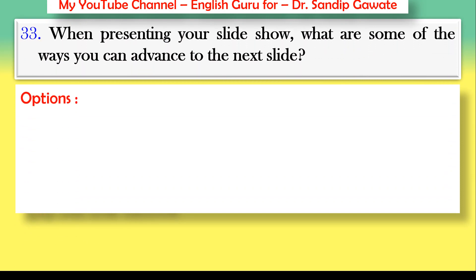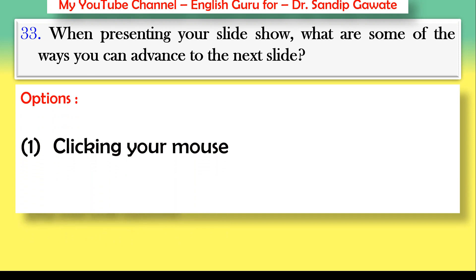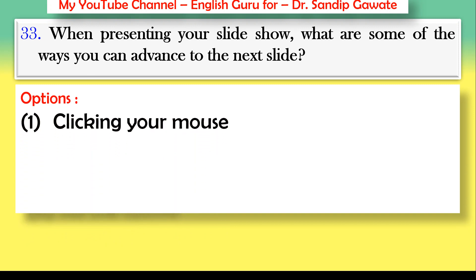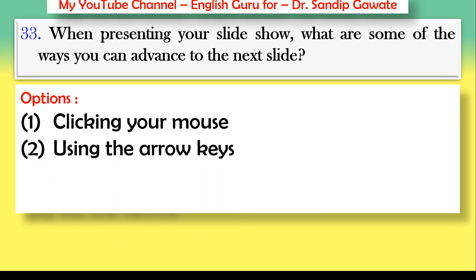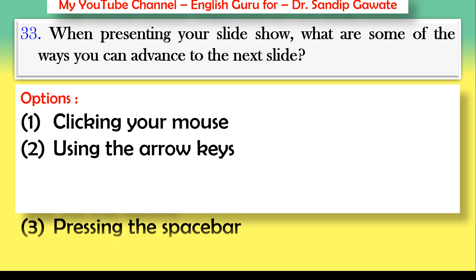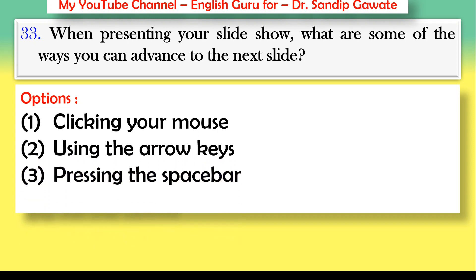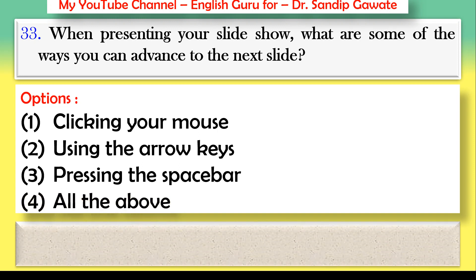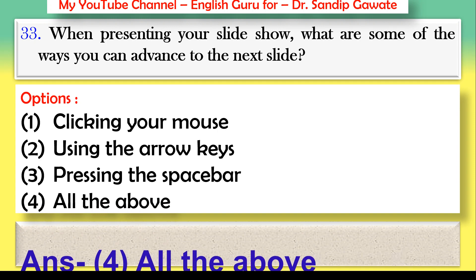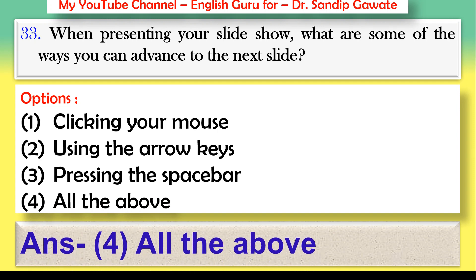Question 33: When presenting your slideshow, what are some of the ways you can advance to the next slide? Options: clicking your mouse, using the arrow keys, pressing the space bar, or all of the above. The correct answer is option number four — all of the above.